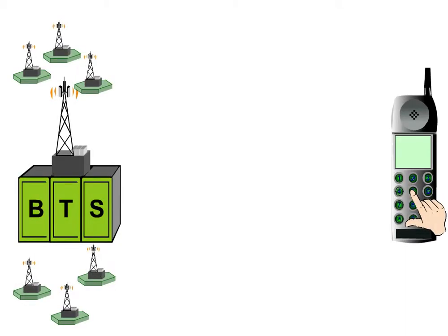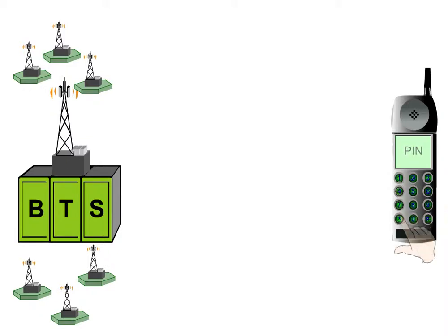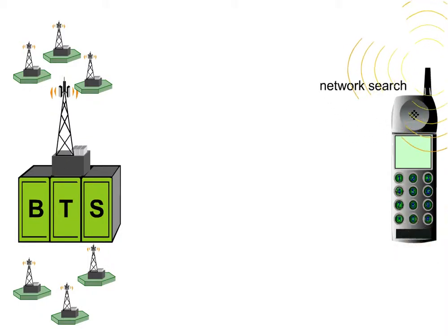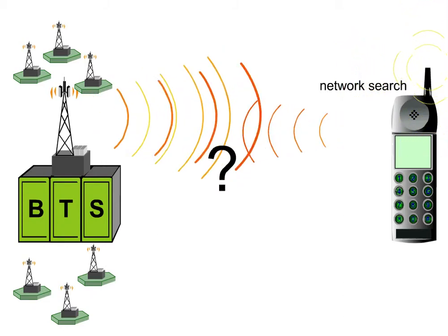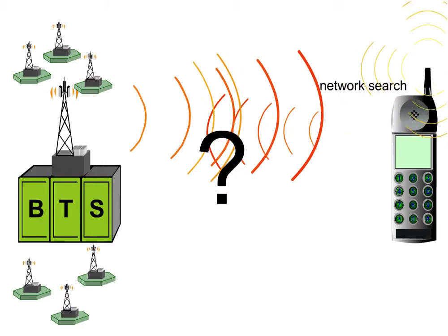After the subscriber has switched on his mobile station and typed in his PIN code, the mobile station searches for a network. But how does it log on to the network the subscriber is registered with?